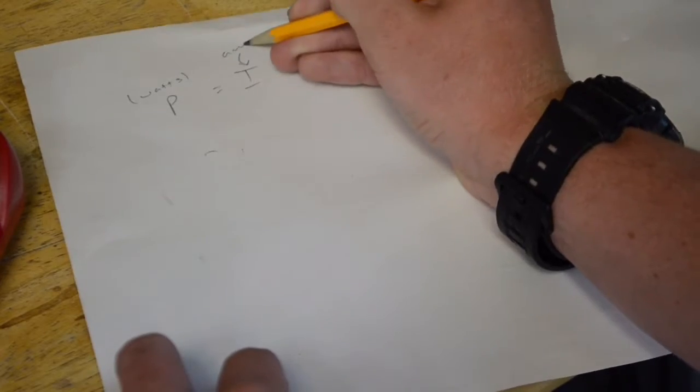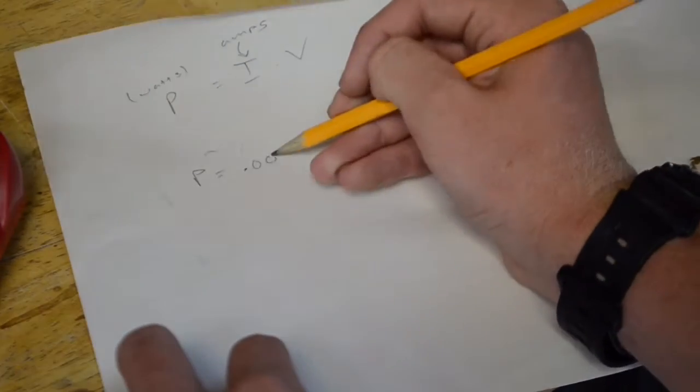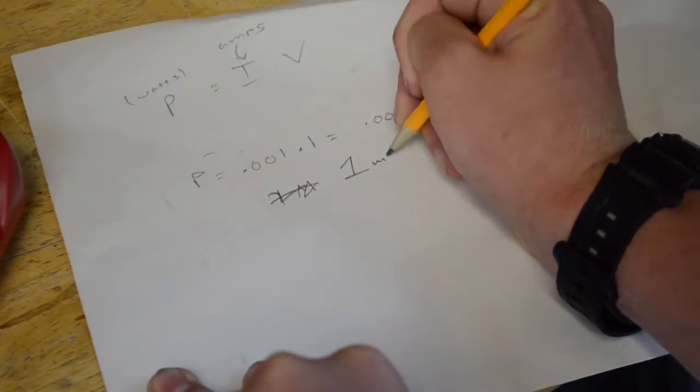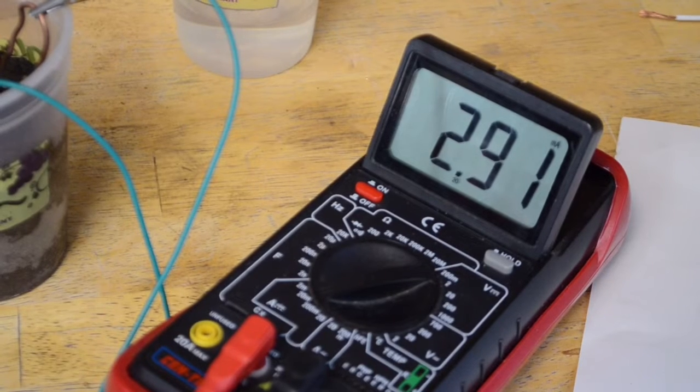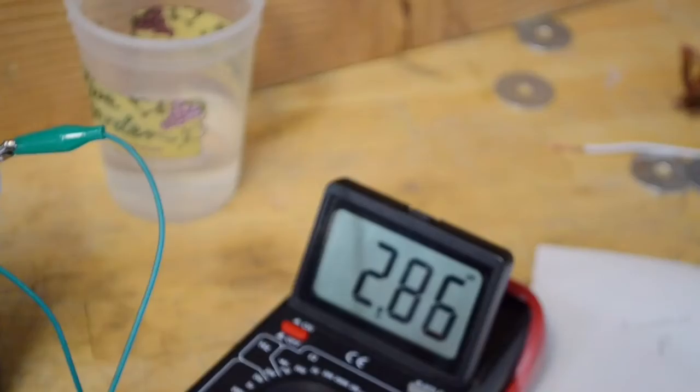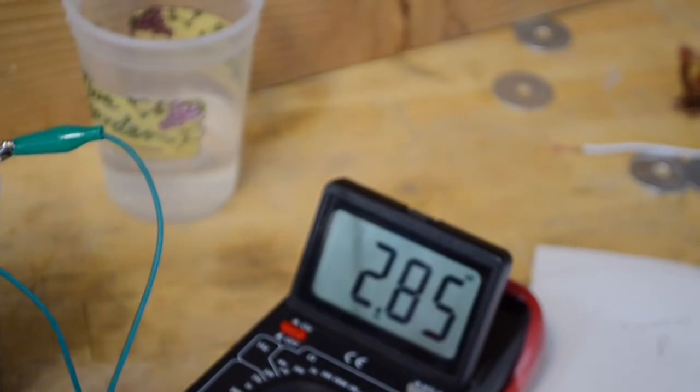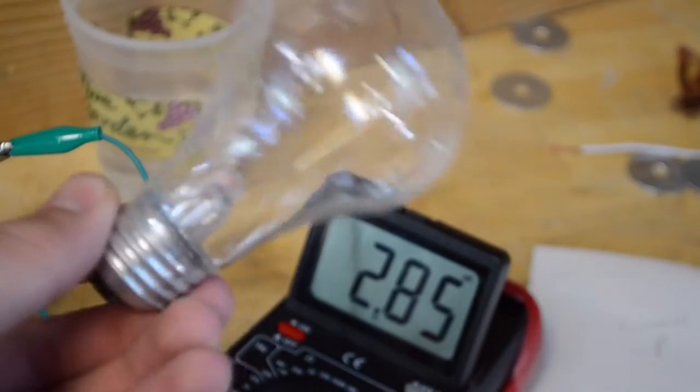If we run through some quick calculations we can see that all we're getting from this is 1 milliwatt. And actually now I'm getting a current of about 3 milliamps, so we're actually getting around 3 milliwatts. But still that's a measly power considering a light bulb like this normally runs on about 60 watts.